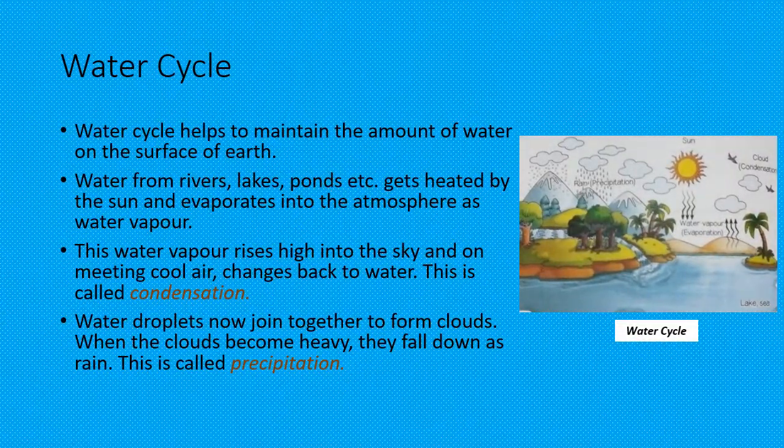Water Cycle: The water cycle helps to maintain the amount of water on the surface of the earth. Water from rivers, lakes, ponds, etc. gets heated by the sun and evaporates into the atmosphere as water vapor. This water vapor rises high into the sky, and on meeting cool air, changes back to water. This is called condensation.